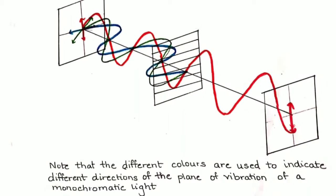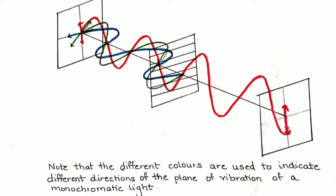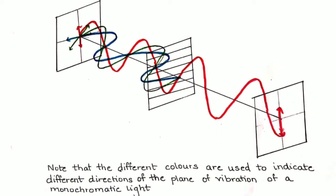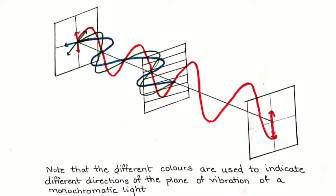Rays, red, blue, green coming from the source are unpolarized. After passing through a polarizer, the only ray coming out is red.